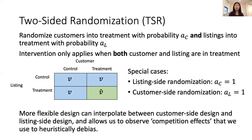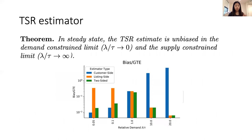This experiment also allows us to observe different competition effects that we can use to heuristically de-bias results — for more details I'll point you to the paper. Essentially, differences between the four cells of the two-sided design can allow you to see how much competition there is between customers and how much competition there is between listings. Based on these insights, we define the new two-sided experiment design and show that it is unbiased in both the demand-constrained and supply-constrained limits. Furthermore, with these heuristic competition correction terms, it actually performs well in intermediate regimes of moderate market balance as well.